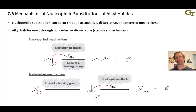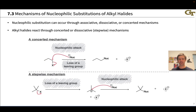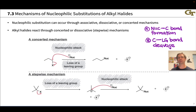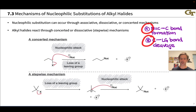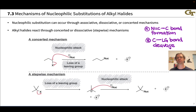In any nucleophilic substitution reaction, two things need to happen: the formation of a bond between the nucleophile and the electrophilic carbon, and cleavage of the carbon-leaving group bond. I've labeled these A and B because we're going to use these two ideas to distinguish between two possible mechanisms of nucleophilic substitution.